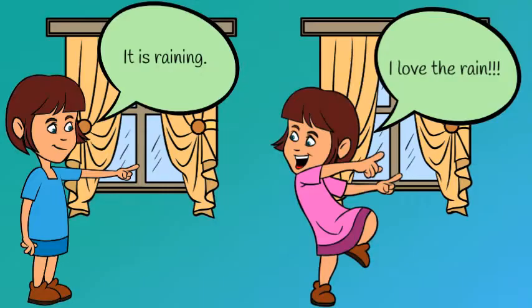However, anything subjective has feelings. Only the subject can describe how rainy days make them feel or whether or not they enjoy rainy days. Objective: it's raining out. Subjective: I love rainy days.